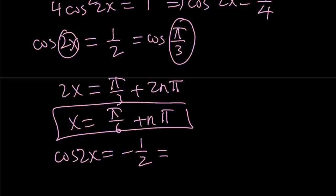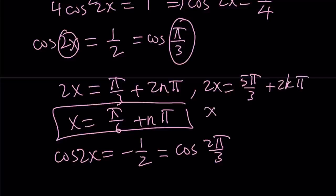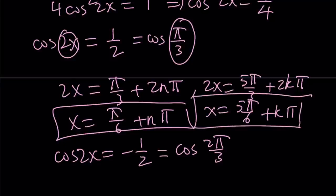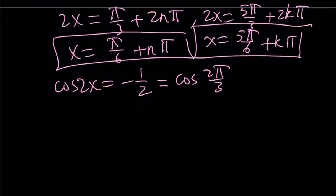And again, of course, one thing we forgot here with the first set of solutions, we could also say 2x could equal 5 pi over 3, right, plus 2k pi. And from here, we get 5 pi over 6 plus k pi. That's another set of solutions because cosine is an even function. If you negate the angle, you're going to get the same cosine.